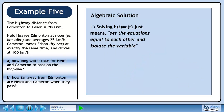Solving h of t equals c of t just means set the equations equal to each other and isolate the variable. When we set Heidi's equation equal to Cameron's equation and solve for t, we get 1.6 hours.